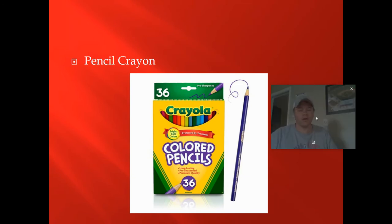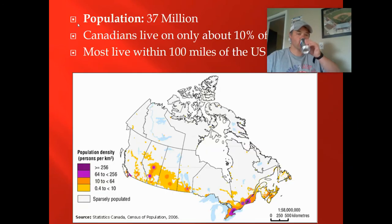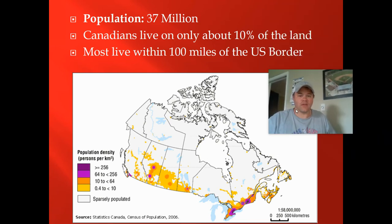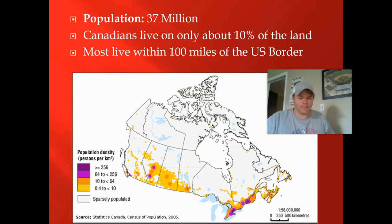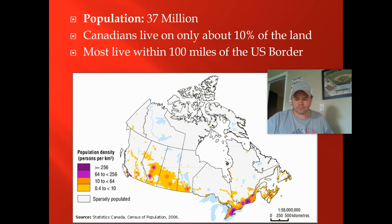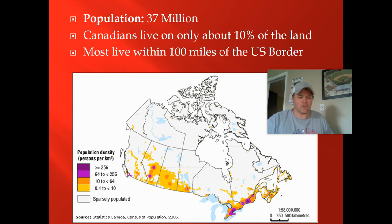Canada's population is about 37 million — roughly the same as California. Canadians live on only about 10% of the land, and most live within 100 miles of the U.S. border. Looking at Ontario, you might think it's sparsely populated, but Ontario extends way down south — people are packed into Toronto down here. In fact, Fort Frances sits right on the border but is considered Northern Ontario because Southern Ontario is much further south.